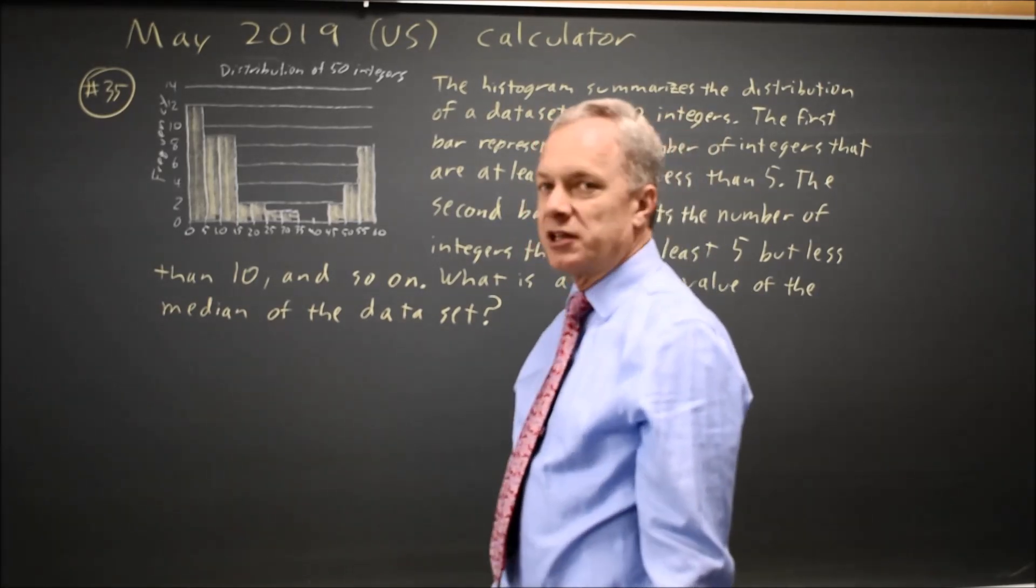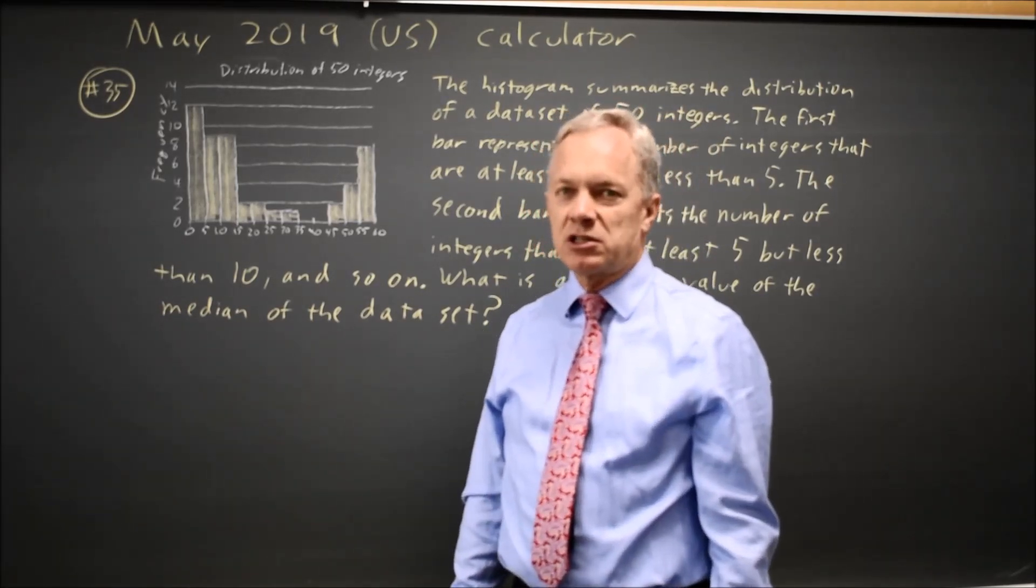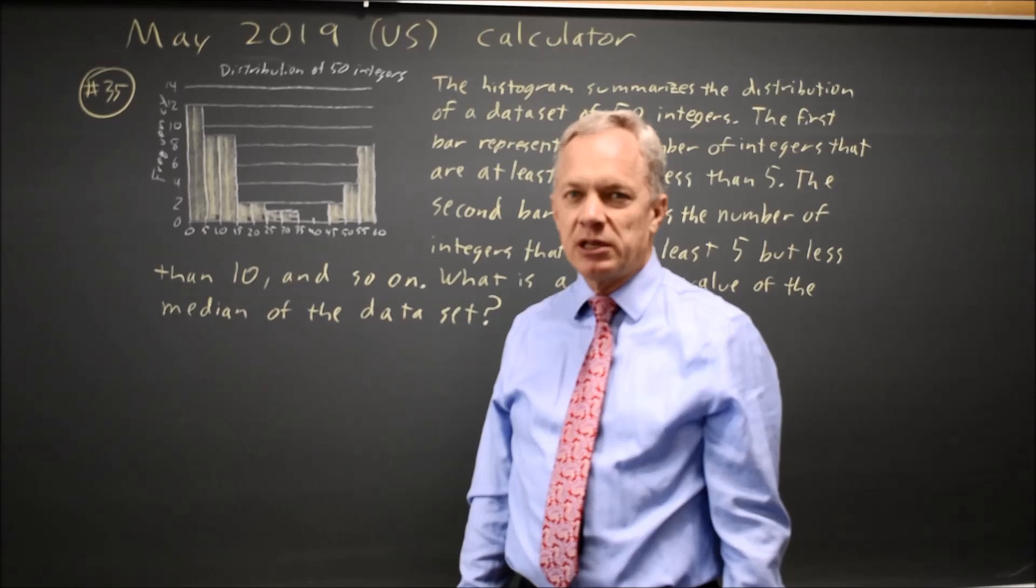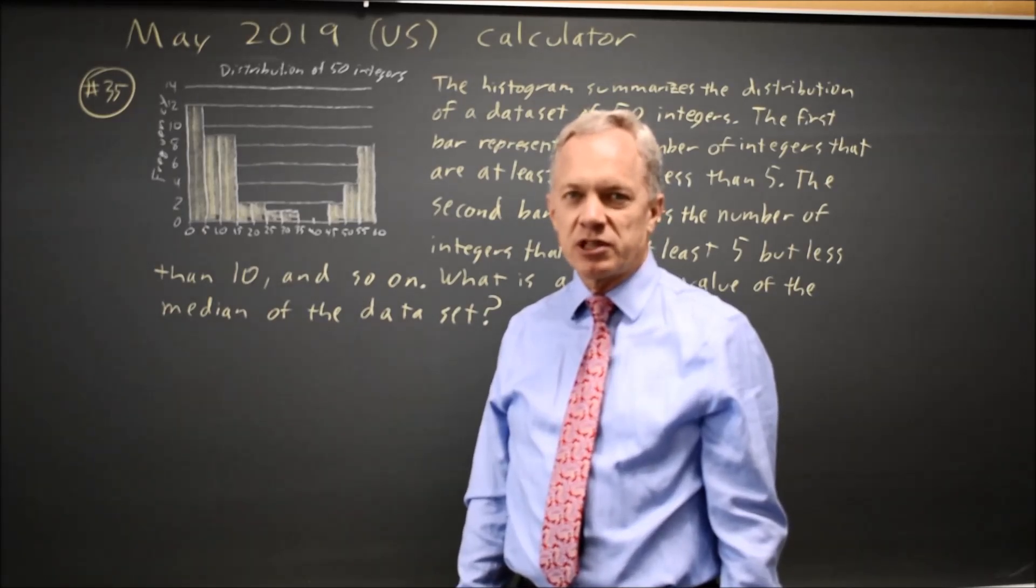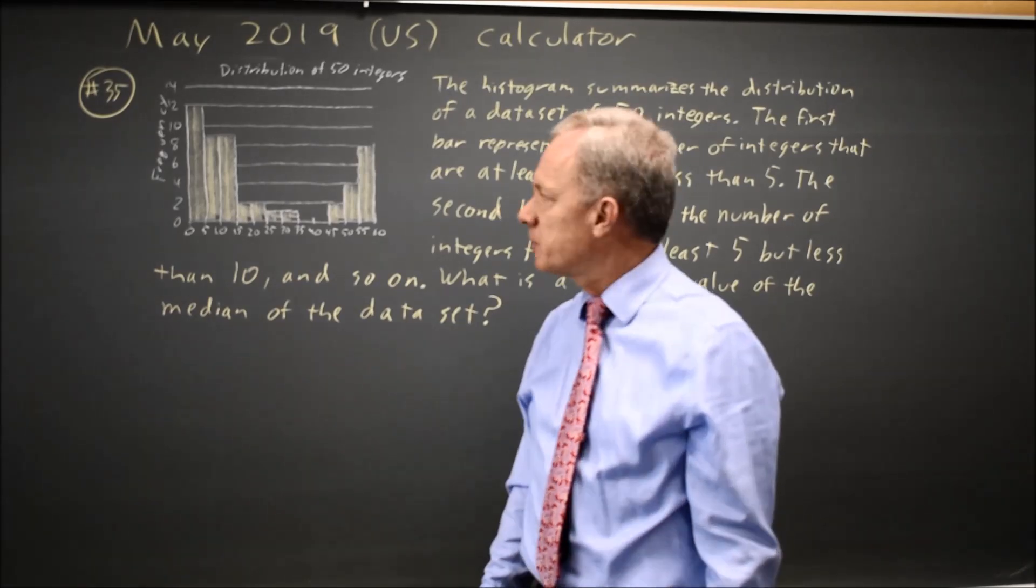Since there are 50 integers, if you sort them from smallest to largest, the median will be midway between the 25th and 26th largest, or 25th and 26th smallest. Those are the same thing.